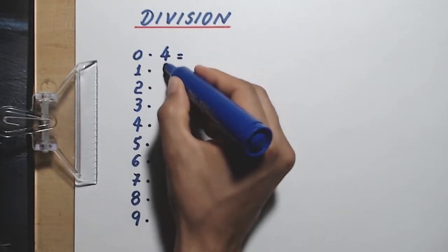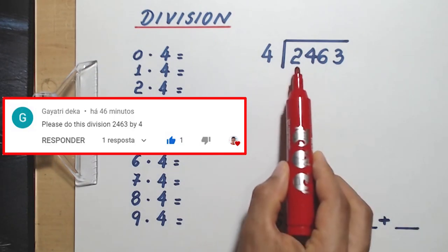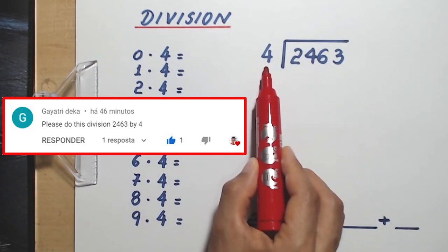Okay guys, Democles Rocha here. Today we're going to practice some division. What is 2,463 divided by 4?